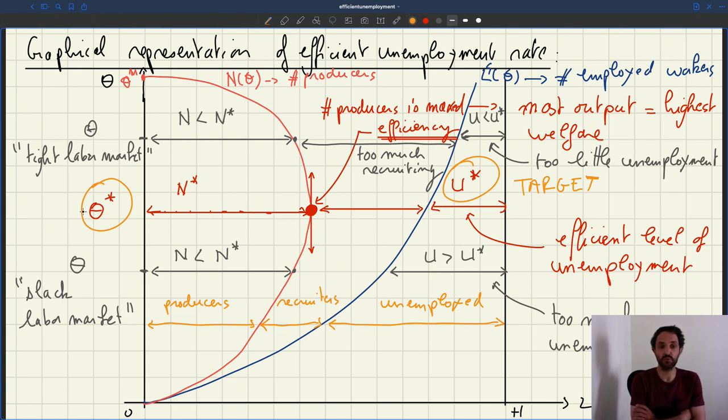Well, here it doesn't work because we do not have perfect competition. Here instead we model the world as markets not as being perfectly competitive, but as having a matching structure. Once you allow for a matching structure, there is absolutely no guarantee that your world is efficient. So the whole free market ideology or capitalist ideology totally collapses here because there is no guarantee that without government intervention you will be able to sustain efficiency.